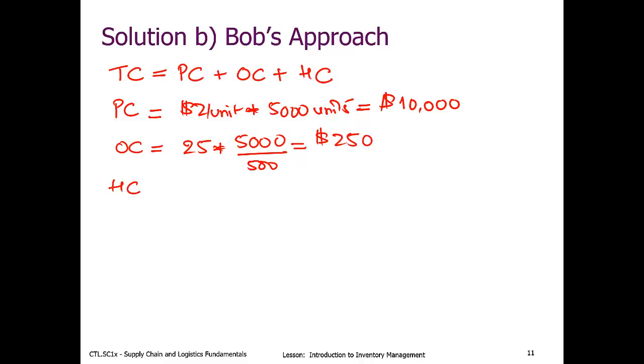What about holding cost? Will this change? Well, what's the CE? CE is C times H, and our C is again $2. Our H was 0.28. And this goes with average inventory on hand, which is 500 divided by 2. So this doesn't change. We still get the old $140.